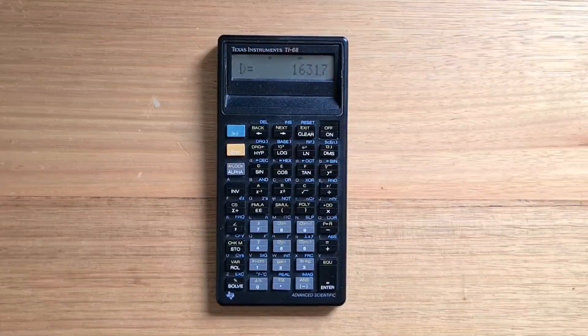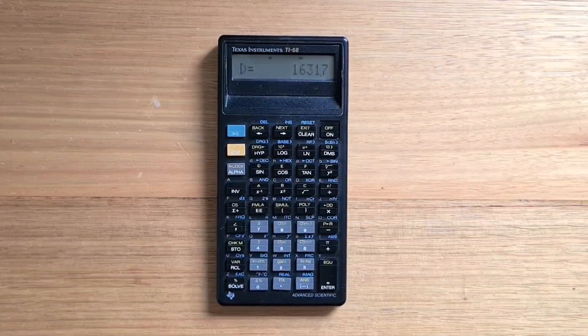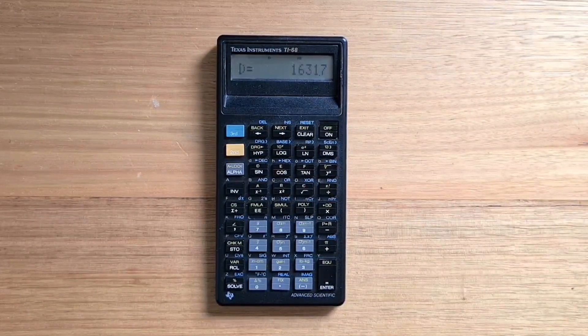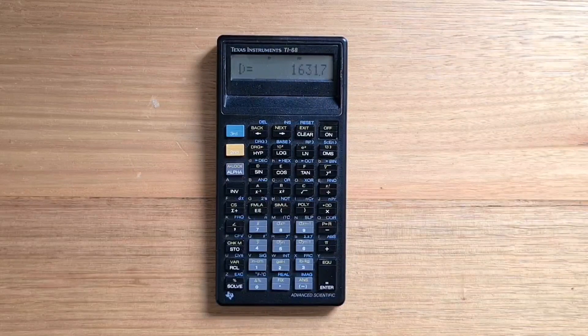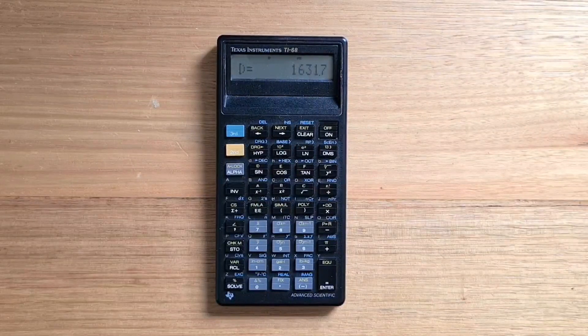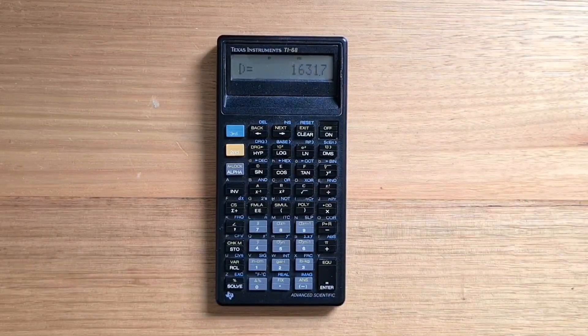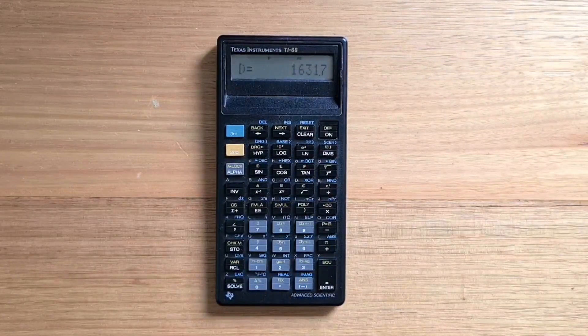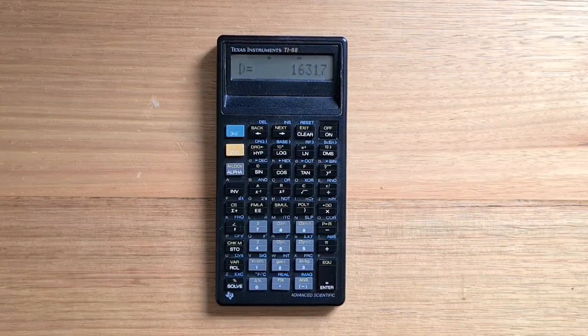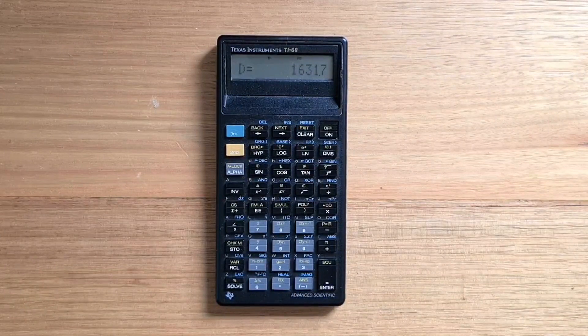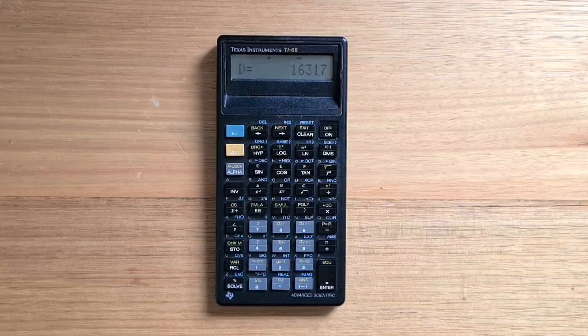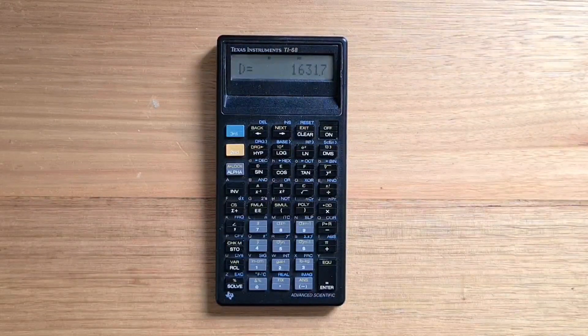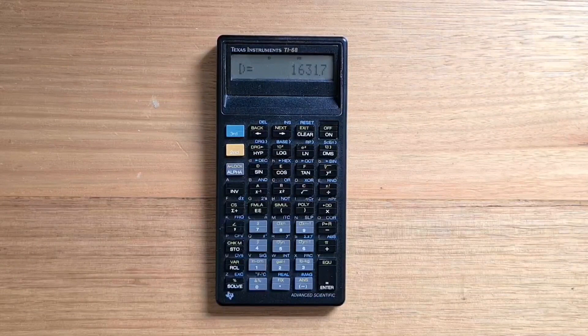The TI-68 packed a lot of functionality into a compact device, and its complex number support is particularly great. With two shift keys, the 68 had a lot of handy numeric and metric to imperial conversion functions available, and also supported the usual one or two point statistical features, including linear regression. With the EOS, it was a massive leap forward for the usability of TI calculators, and it really caught it up to its Japanese rivals.